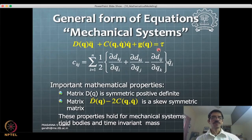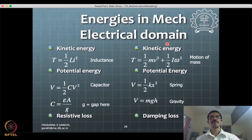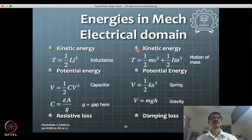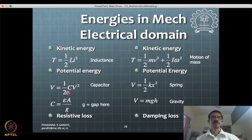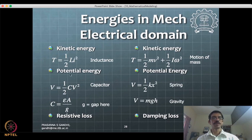I will give you some glimpses here for generalizing the Lagrange formulation for the electrical domain as well. This is the way kinetic energy and potential energies are defined in the electrical domain. If you use this for a circuit independently, you will get the circuit expressions.